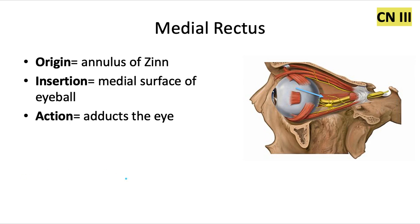Lastly, we have the medial rectus. It also originates from the annulus and inserts into the medial surface of the eyeball, and it acts by adducting the eye. Note that all four of the rectus muscles originate from the annulus — you might remember that because they both end in 'us.'